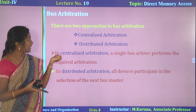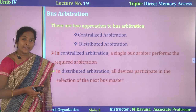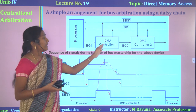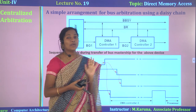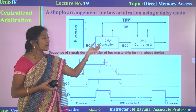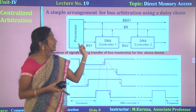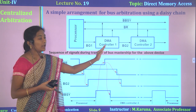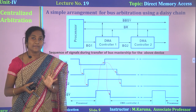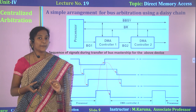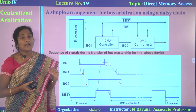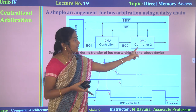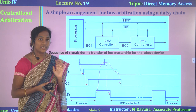Let us go into centralized arbitration and distributed arbitration in detail. In centralized arbitration, the processor, DMA controller 1, DMA controller 2, and so on are connected in daisy-chain fashion. Here, the processor and all controllers may require the bus at the same time, causing a conflict — which is why we use centralized or distributed arbitration. For example, DMA controller 1 and DMA controller 2 are connected in daisy-chain fashion. When a DMA controller wants to use the bus, it sends a bus request to the processor.